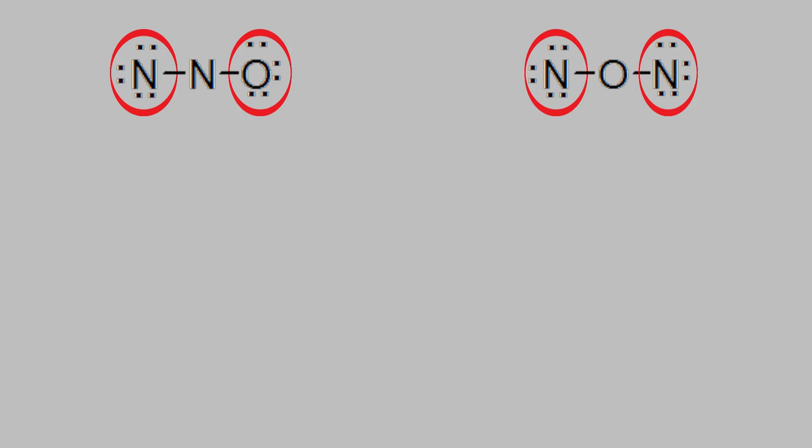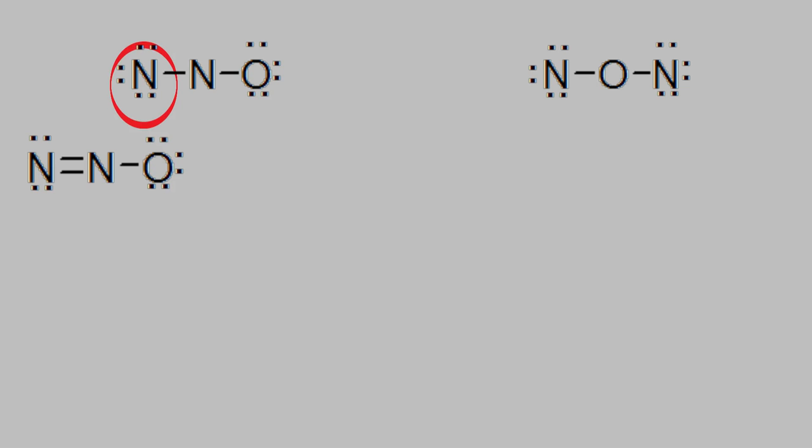This is actually the challenging part. In each molecule, there are two different atoms that can have electron pairs that we can convert into bonds. Which one should we choose? The answer is, we don't really know. What we need to do is to try both possibilities. So for the first molecule, we'll try making a bond to the nitrogen and also try making one to the oxygen. In the second molecule, we'll try making a bond to each of the two nitrogens.